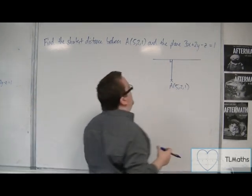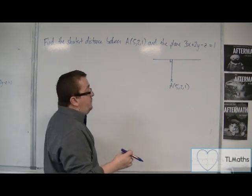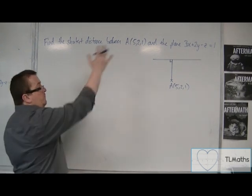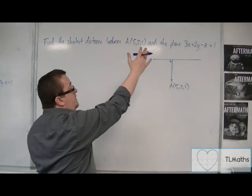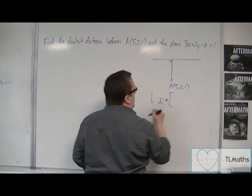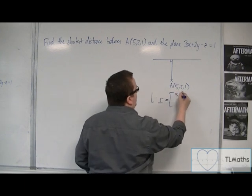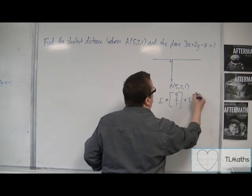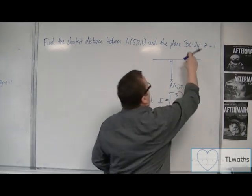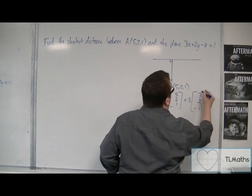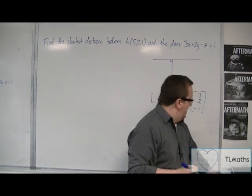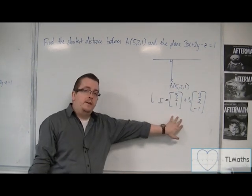The normal vector is (3, 2, −1). The line that goes from A and through the plane would have equation: the position vector of A, which is (5, 2, 1), plus λ times the direction given by the normal vector, (3, 2, −1).